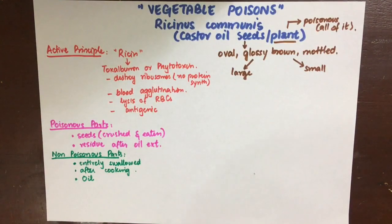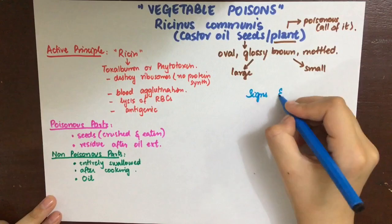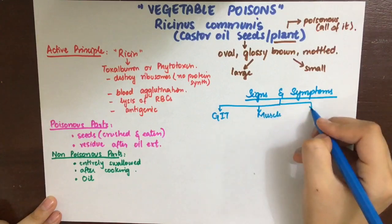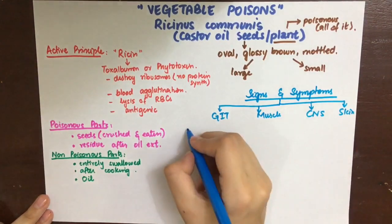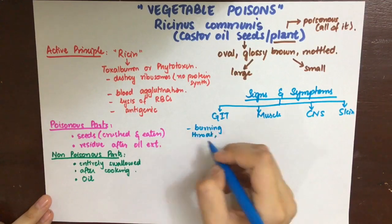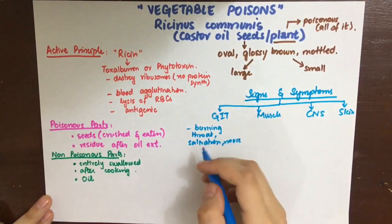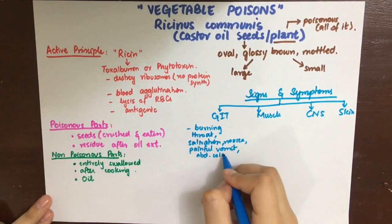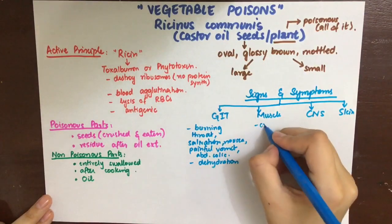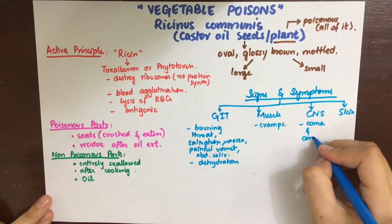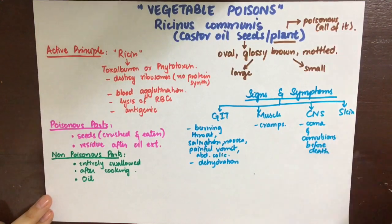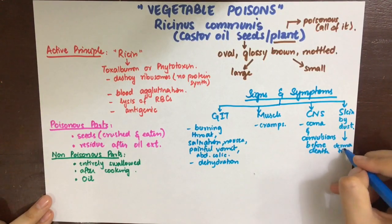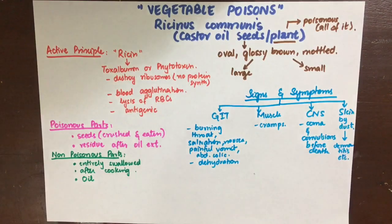The signs and symptoms of Ricinus communis poisoning affect the GIT, muscles, CNS, and skin. In the GIT, it causes burning throat sensation, salivation, nausea, profuse and painful vomiting, colicky abdominal pain, and dehydration. Muscle cramps occur due to dehydration. CNS symptoms manifest as coma and convulsions before death. The skin is affected by dust from the residue, leading to dermatitis, conjunctivitis, rhinitis, allergy, and asthma.